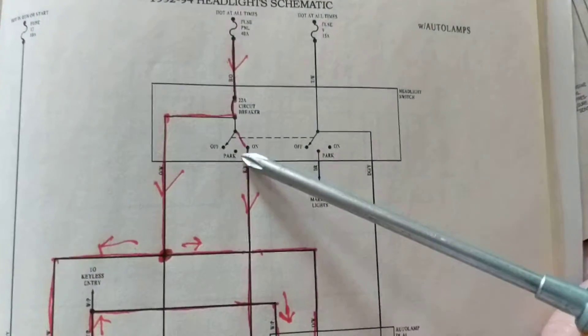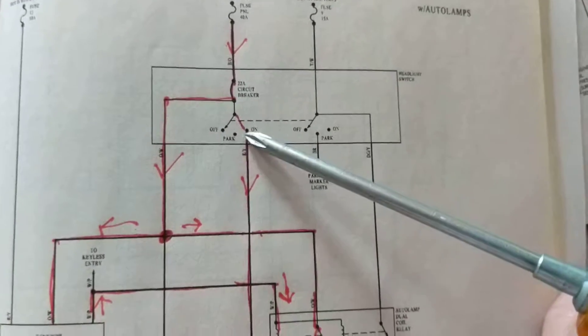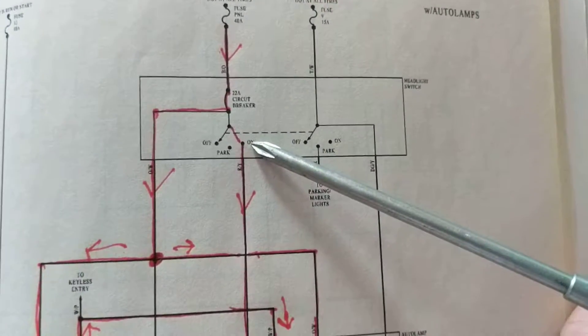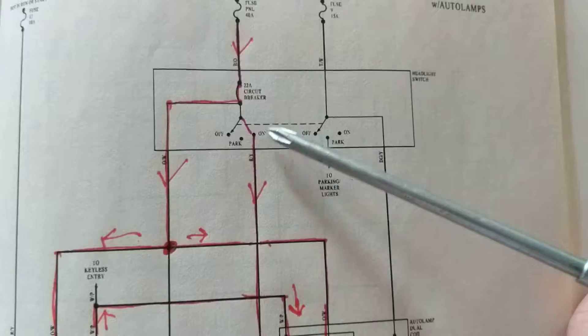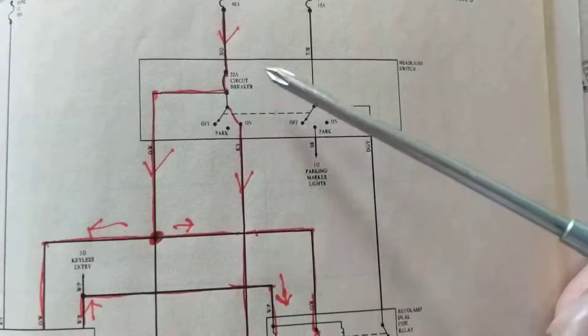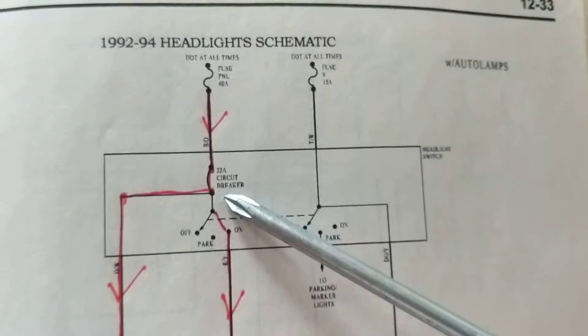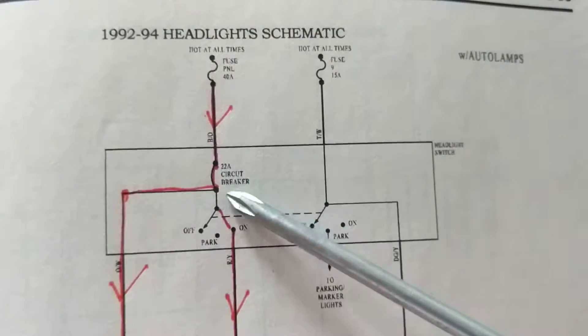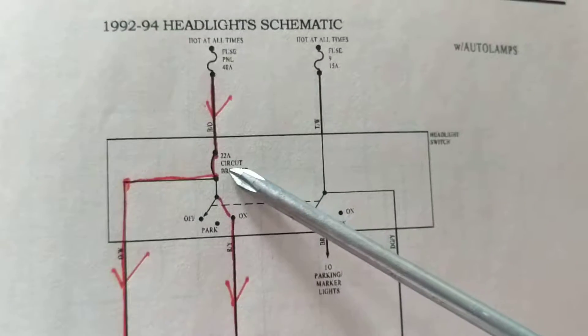As always, we start here. This is the switch that we are activating, either in park or headlamps. We are going to put it for, let's say, headlamps. So this is a circuit breaker. Maybe you have never seen this before in a schematic, but it is a circuit breaker.